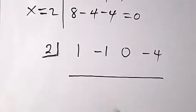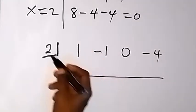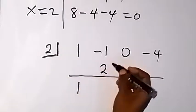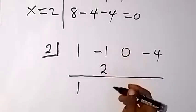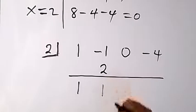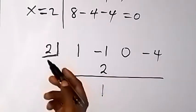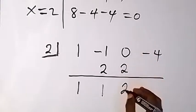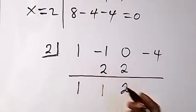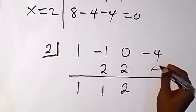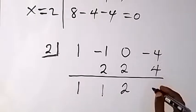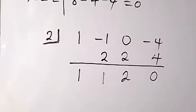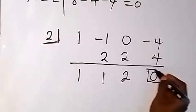We drop the 1 down. Then 2 times 1 is 2 — we write it here and add: minus 1 plus 2 equals 1. Multiply by 2 again: 2 times 1 gives 2. Add again: 0 plus 2 is 2. Multiply again: 2 times 2 gives 4. Add: minus 4 plus 4 equals 0. The remainder is 0, which confirms that 2 is a root of this polynomial.